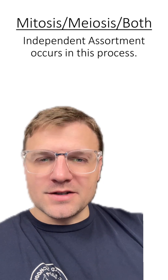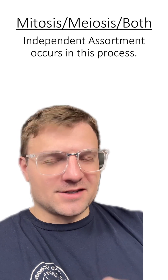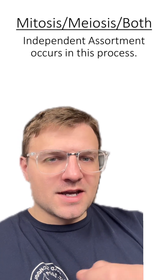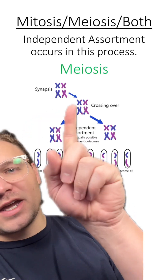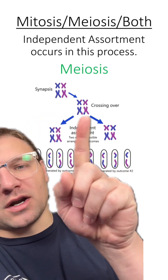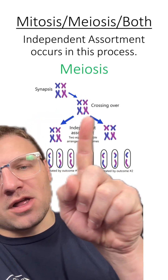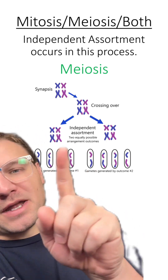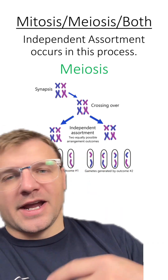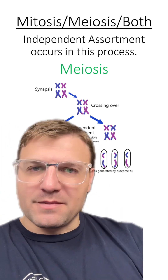Independent assortment occurs in this process. Is this mitosis, meiosis, or both? This is meiosis. Since we're pairing up these homologous chromosomes, there's going to be independent assortment, and that only occurs in meiosis.